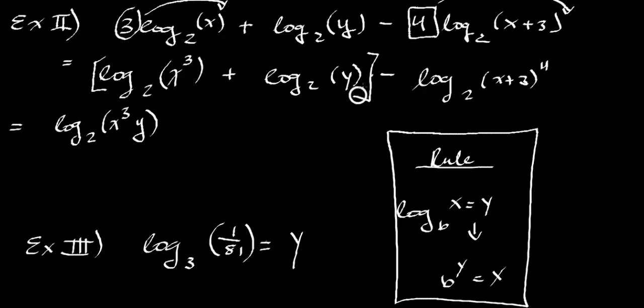The same thing as multiplying them together. But we keep the log and the base. So to rewrite this, we get log base 2, x to the 3rd times y. This times that. And we still have minus log base 2, x plus 3 to the 4th. So we are almost done. We still have the same base. Always having the same base is just so much easier to work with.